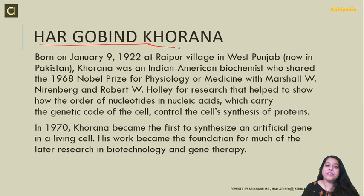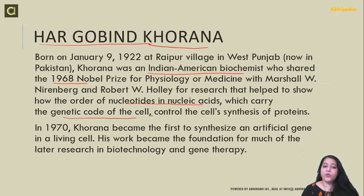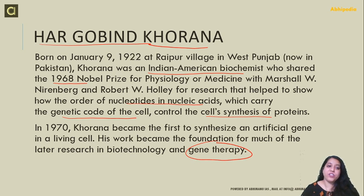One notable NRI scientist is Hargobind Khorana. He was born on 9th January 1922 at Raipur village in West Punjab. He was an Indian-American biochemist who shared the Nobel Prize in 1968 for Physiology or Medicine with Marshall W. Nirenberg and Robert W. Holley, for research showing how the order of nucleotides in nucleic acid carrying the genetic code of the cell controls the synthesis of proteins. This foundational work in genetic theory and gene therapy enabled much of the later research in biotechnology and gene therapy.